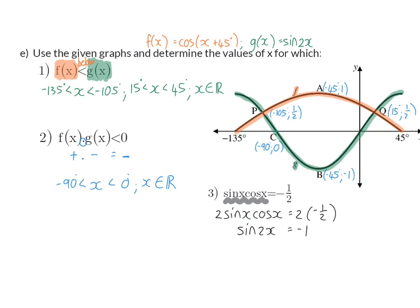And we need to realize now that sin 2x is our g graph, so the question is actually simply, where is this green graph equal to minus one? And that will be at coordinate B, so the answer is simply at x is minus 45.